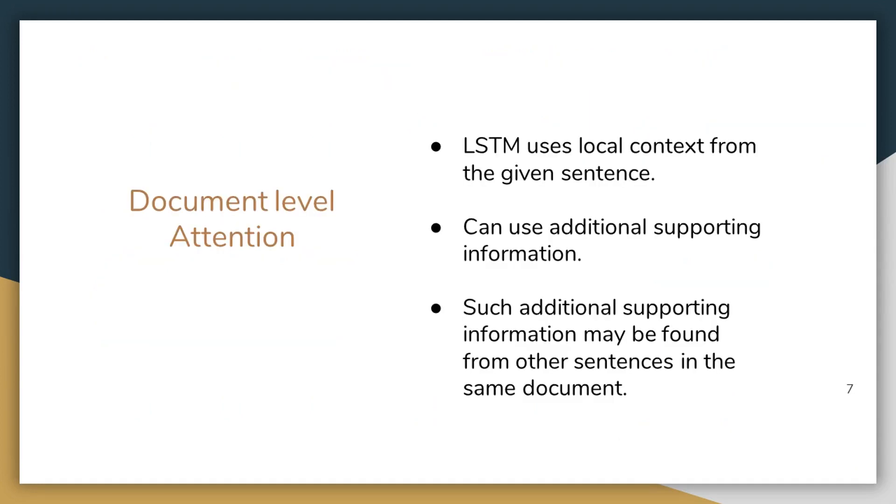But if there is additional supporting information to enrich its representation, it is really helpful when the local contexts are ambiguous. So where can we obtain this additional supporting information? We can obtain such additional supporting information from other sentences in the document. For this, we propose document level attention mechanism.